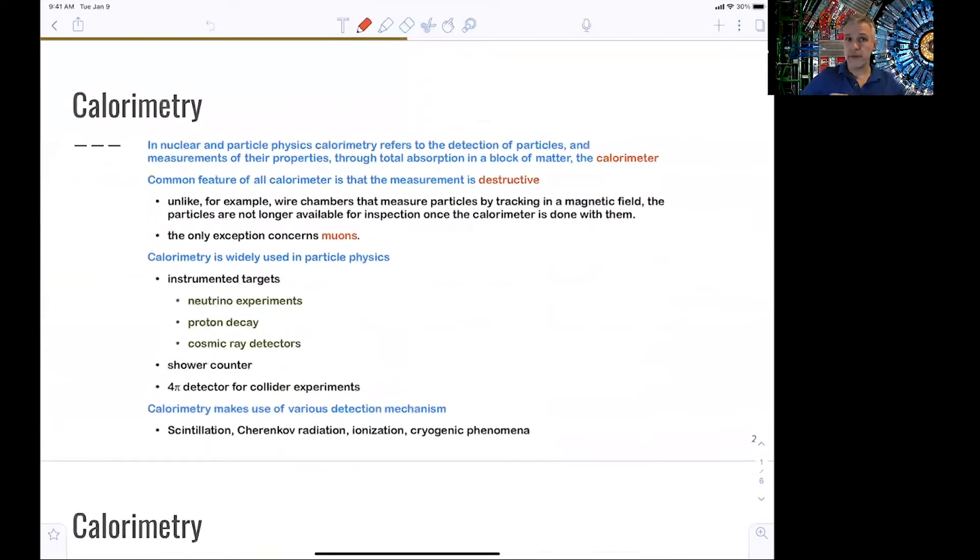So in nuclear and particle physics, that is exactly what we refer to as calorimetry. The detection of particles by measuring their properties through the total absorption in a block of matter. The common feature, or the central feature, is that the measurement is destructive. So again, in tracking detectors, we try to minimally disturb the particle. And in calorimeters, we try to destroy them.